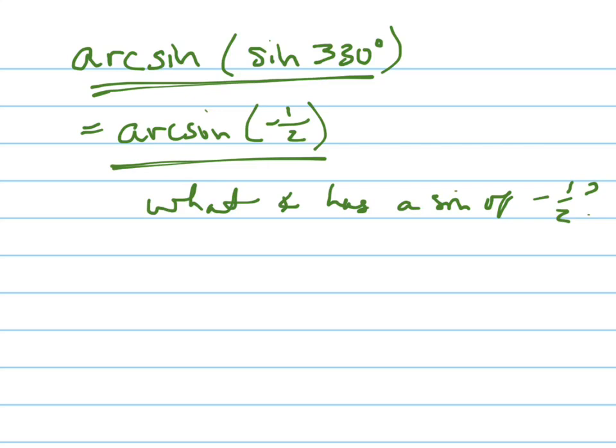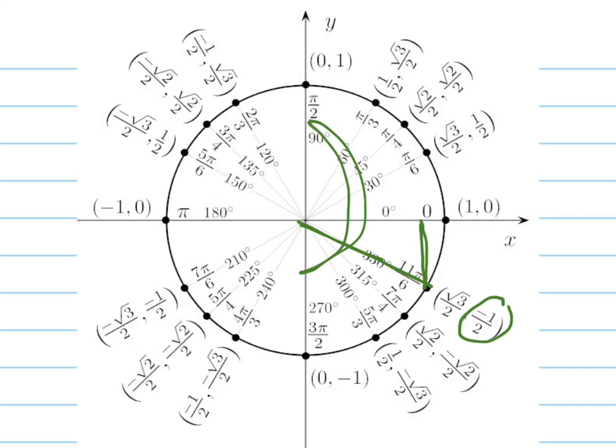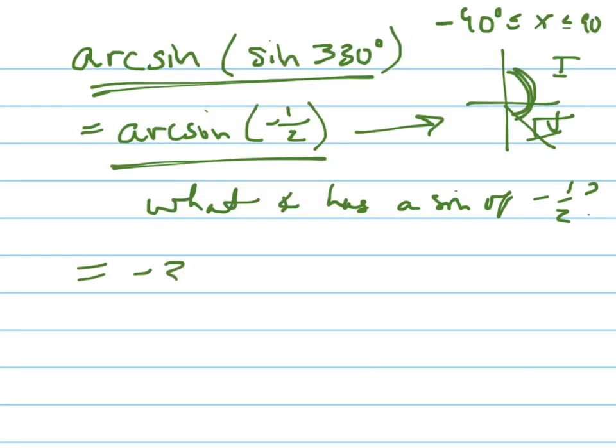And that angle, remember, the range of the sine is in the first and the fourth quadrants. But in the fourth quadrant, you don't say it as 330 degrees, you say negative 30 degrees. So it's from negative 90 to positive 90. That's where the arc sine is right there. So you don't call this 330, you call it negative 30. So the answer to this question is negative 30 degrees, which is coterminal with 330, but it's in the range of the arc sine function.